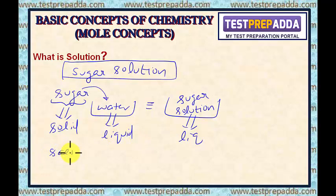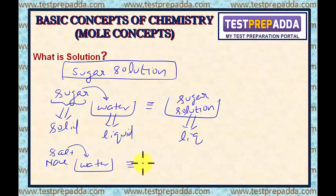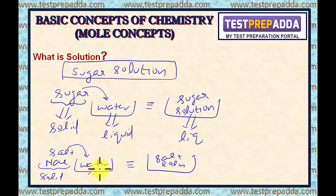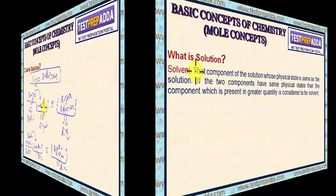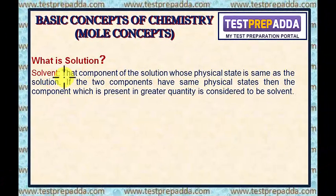If I take the example of salt solution — NaCl mixed with water — we get salt solution. The physical state of NaCl salt is solid, the physical state of water is liquid, and the physical state of salt solution is liquid. In both cases, the solution's physical state is the same as the physical state of the solvent. So, solvent is that component of the solution whose physical state is the same as that of the solution.